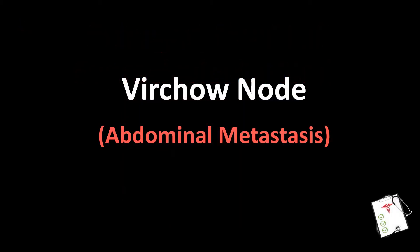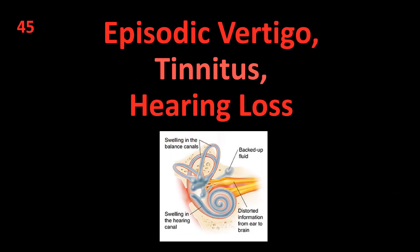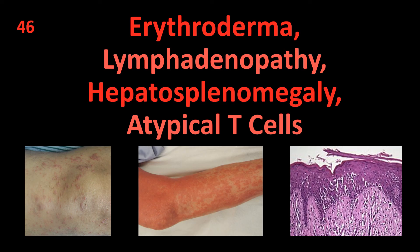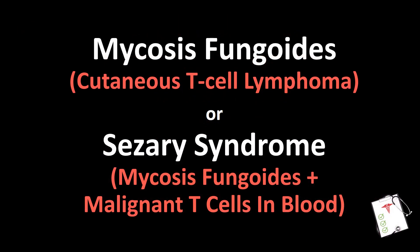Number 45: Episodic vertigo, tinnitus, hearing loss. Answer: Ménière's disease. Number 46: Erythroderma, lymphadenopathy, hepatosplenomegaly, atypical T cells. Answer: Mycosis fungoides (cutaneous T-cell lymphoma), or Sézary syndrome — mycosis fungoides with malignant T cells in blood.